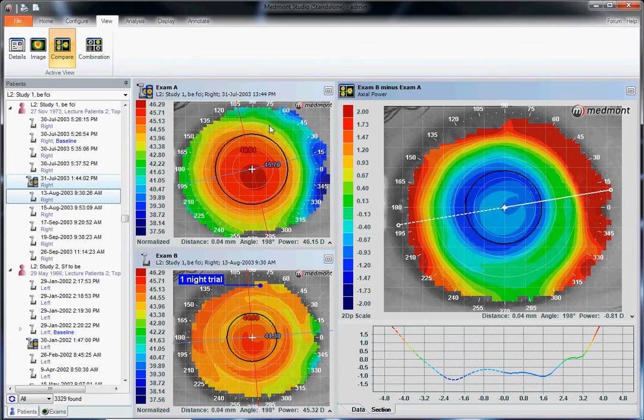Here is your baseline, your earlier image. Here is your later image, your post-treatment topography. The larger view on the right-hand side is your subtractive map. Wherever you see blue, you flatten the cornea over time. Wherever you see red, you steepen the cornea over time or between these two visits.